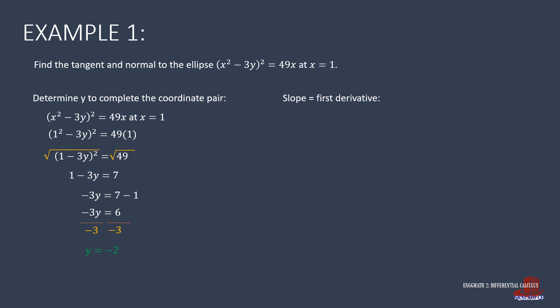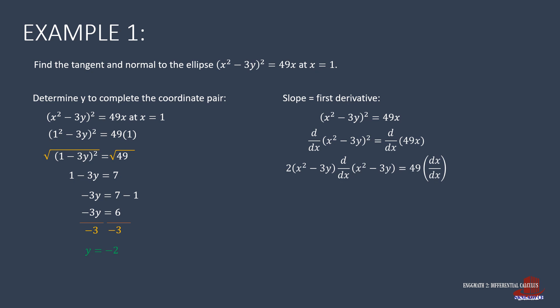We start the procedure by taking the first derivative. We inject d/dx to each term of the equation. For the left side, we have the derivative of the square of the quantity (x squared minus 3y), which is 2 times that same quantity times the derivative of that group. On the right side, we have the constant 49 times the derivative of x with respect to x, which reduces to 1.